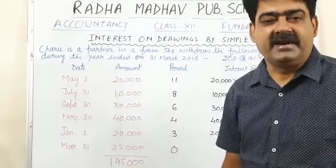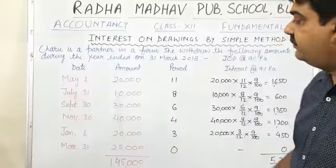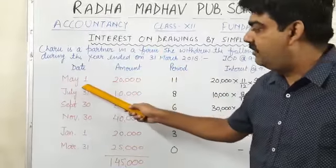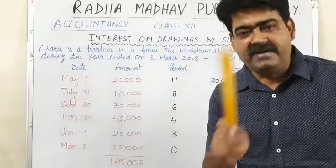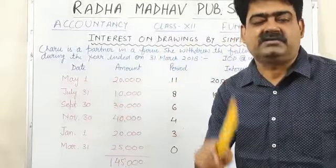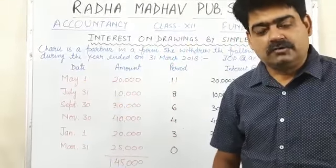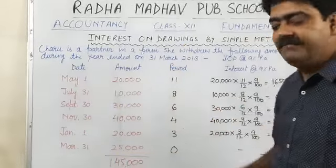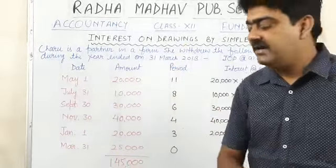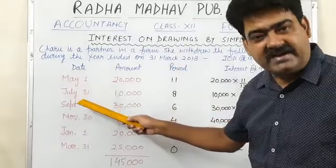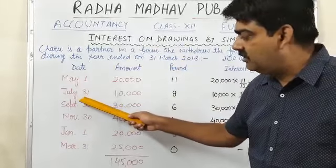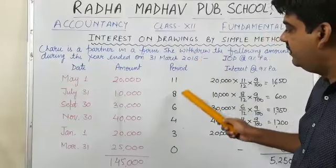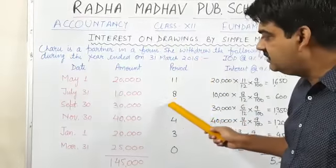First of all, we will calculate the period. Period means we are closing our books on 31st March, and she has withdrawn the first amount on May 1. So from May 1 to 31st March, the total time period will be 11 months. After that, we will calculate the time period for the second withdrawal, which is on July 31. From July 31 to March 31, the total time period will be 8 months.